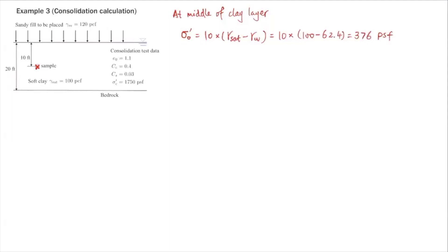The change in effective stress is basically the weight of the sandy fill on top, which is also the same as the previous example. We have 10 feet of moist sand on top: 10 × 120 = 1200 psf. That is the same as the first example.